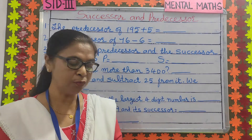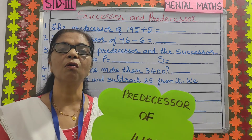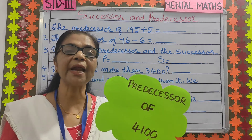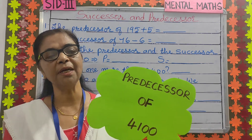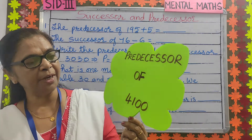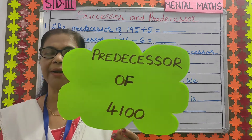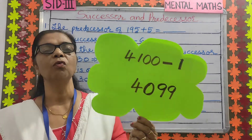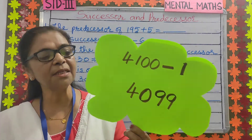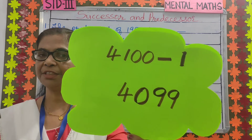And to find the predecessor of a number, you have to subtract 1 from the given number. For example, the predecessor of 4100 is 4100 minus 1, which is 4099.